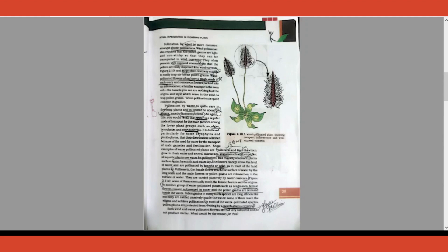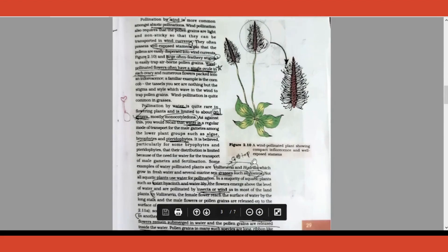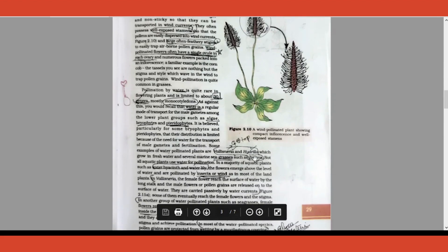Coming to water, only 30 genera undergo water pollination, meaning the agent is water. Underline these two statements: 30 genera, and among the 30 genera most of them are monocots. Which all are water pollinated? Vallisneria, Hydrilla, seagrasses like Zostera—three of them are water pollinated.